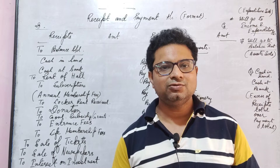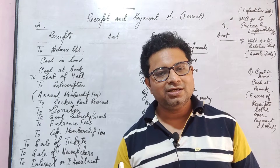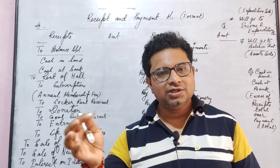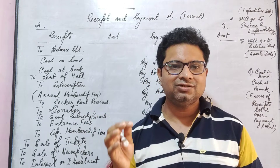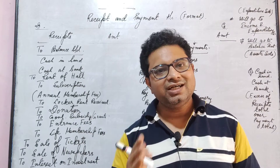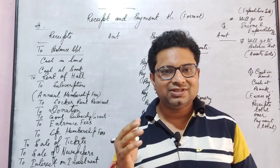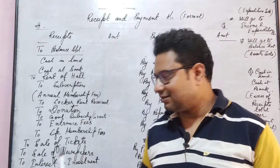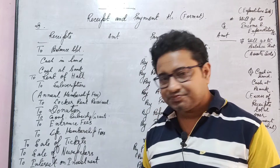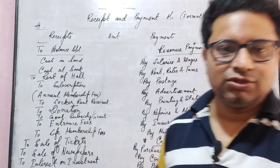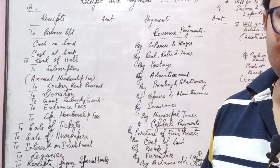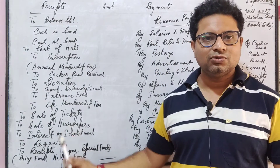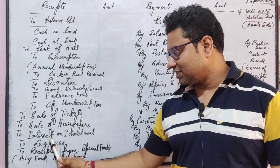The next point is the sale of tickets. Big clubs can have a big party organized, some shows organized, some celebrities called out — so what do they do? They sell tickets so that people can witness the event. They can earn money from here. In non-profit organizations, they can also earn money through various means.